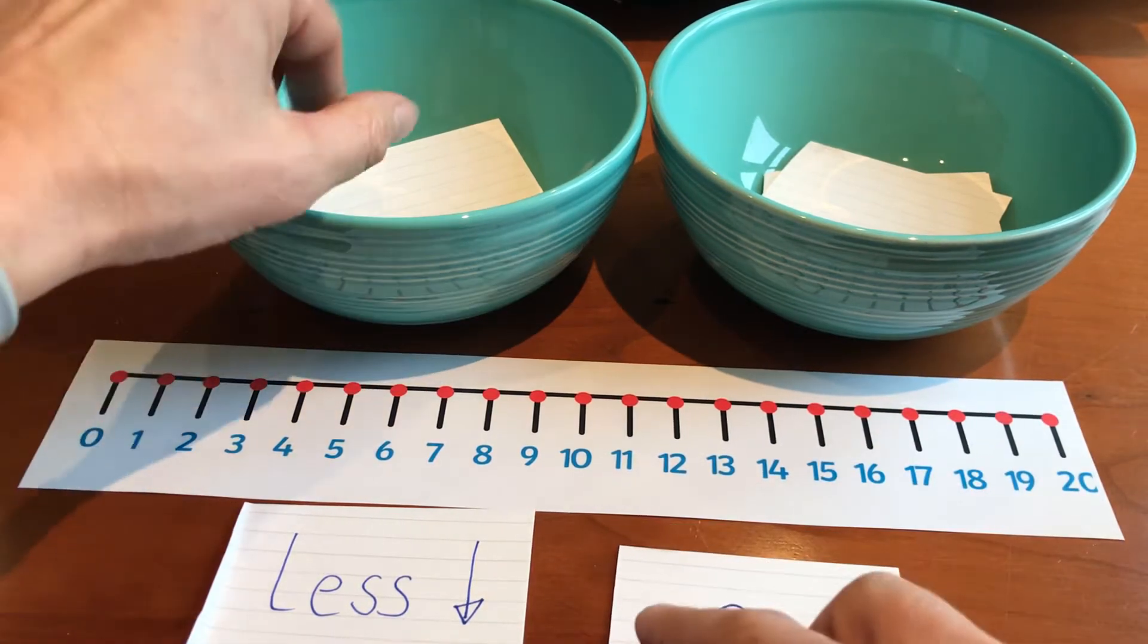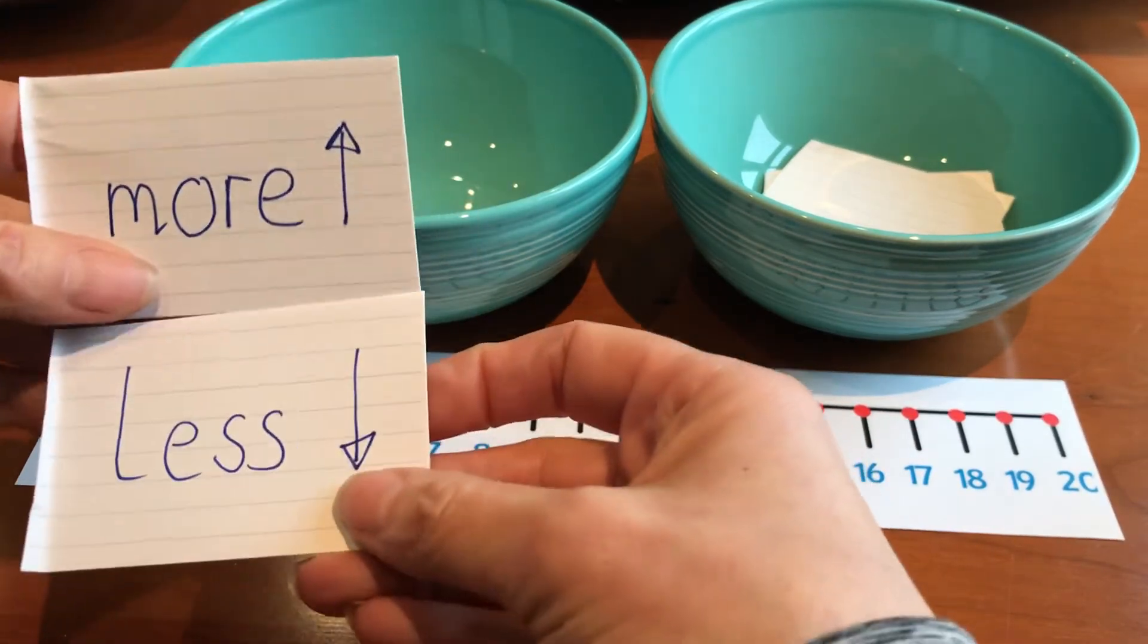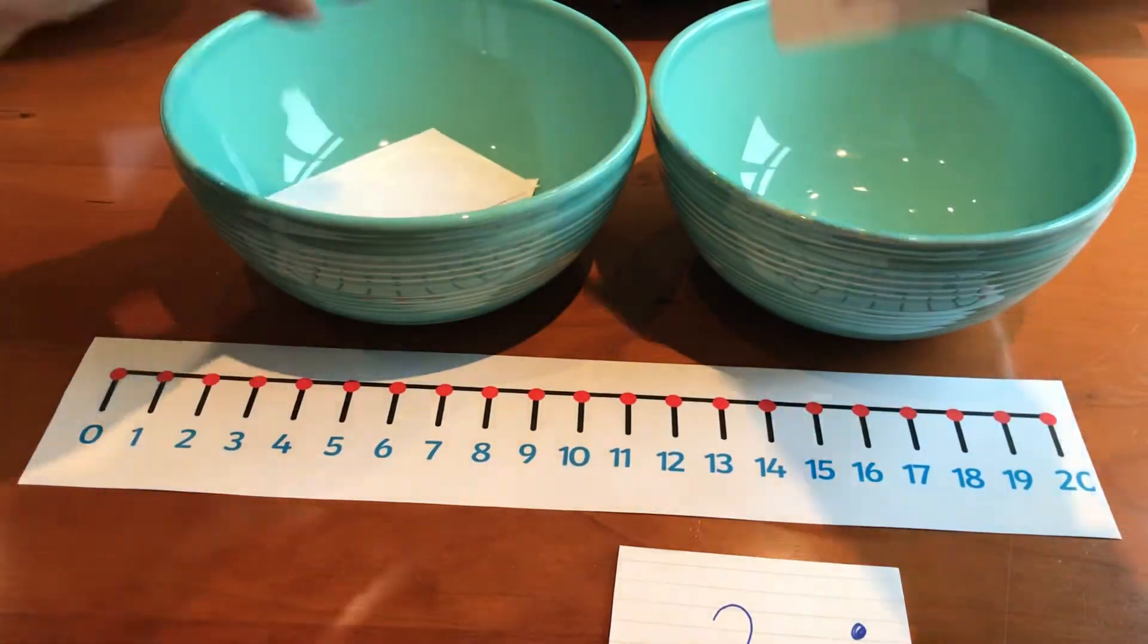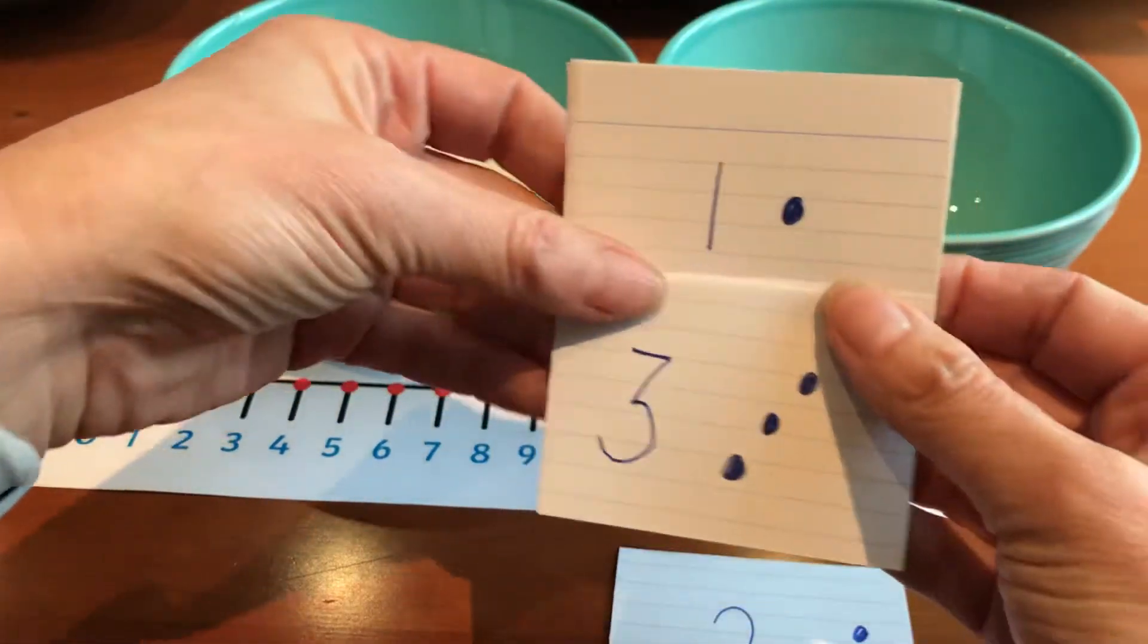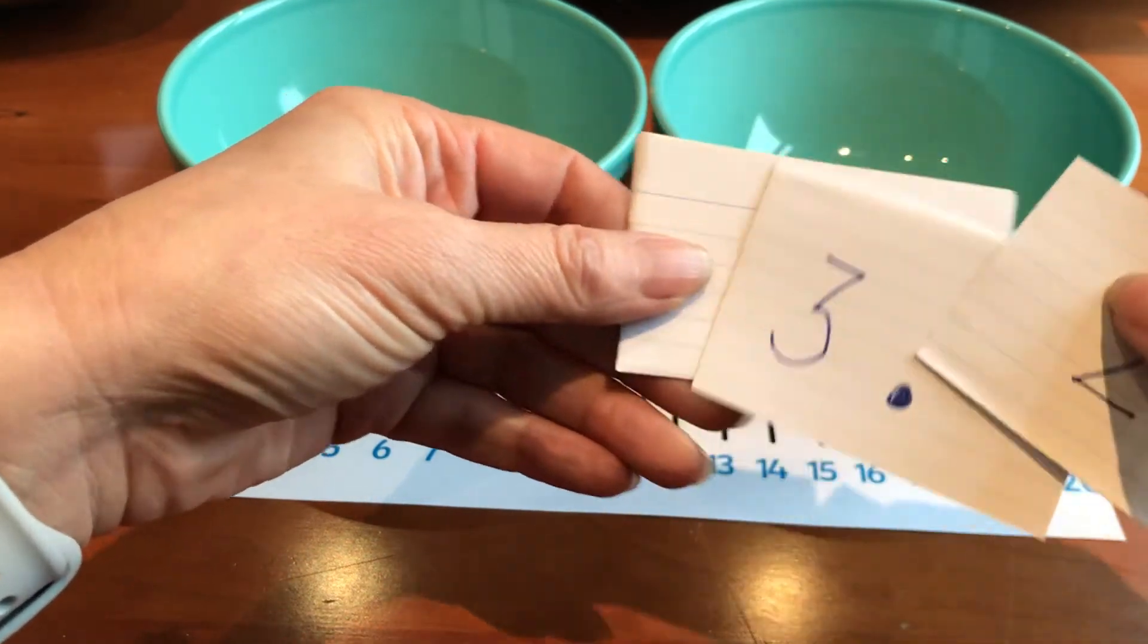Then I've got two bowls, one has got more written in, one has less. And then I've got three numbers: 1, 2, and 3. But you could just do 1 and 2 if that's where your child's working at, or you could do more.